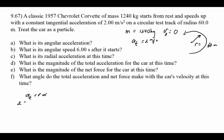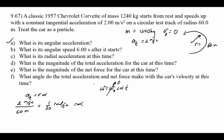So alpha equals 1/30 radian per second squared. Since omega naught is also zero, after 6 seconds: omega equals (1/30) radian per second squared times 6 seconds equals 1/5 radian per second — that's the angular speed after 6 seconds.